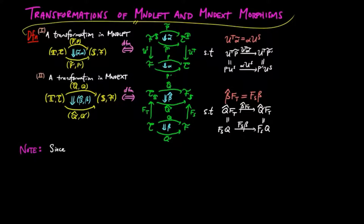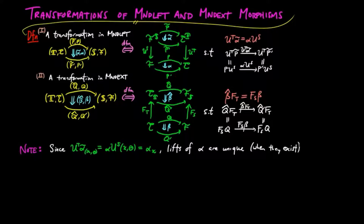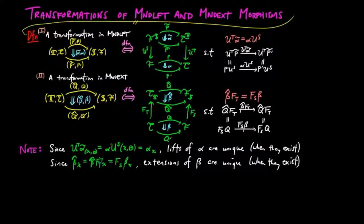Note that since uT·α̃ on component (x,θ) equals α·uS on (x,θ), which by definition is αx, lifts of α are unique when they exist. And since β̂x, which equals β̂·FT(x) by definition of FT, which equals FS·β(x), extensions of β are unique when they exist.